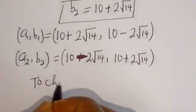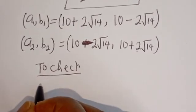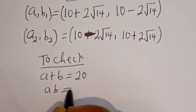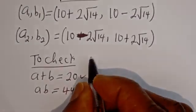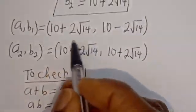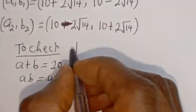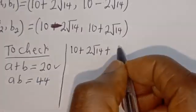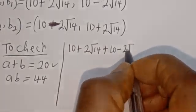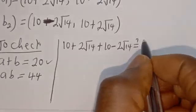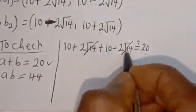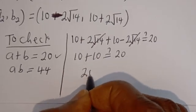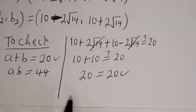To check, the given equations are A plus B equal to 20 and A times B equal to 44. Using A1 and B1: (10 plus 2 root 14) plus (10 minus 2 root 14) must equal 20. The root 14 terms cancel, and 10 plus 10 equals 20, which is true.